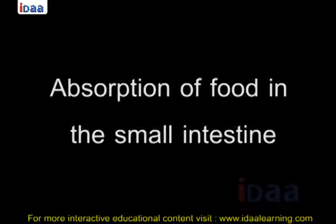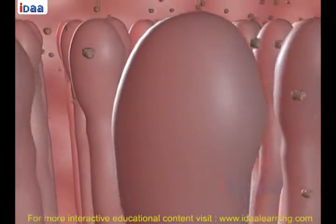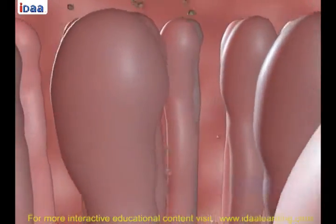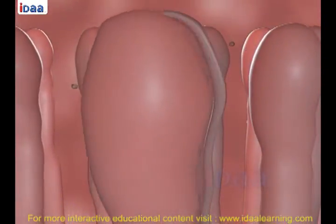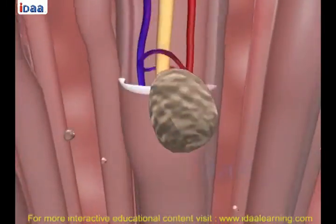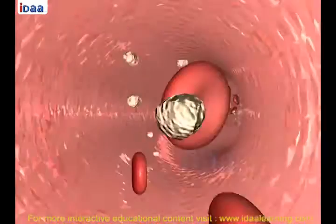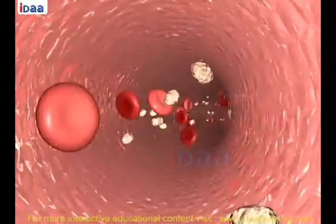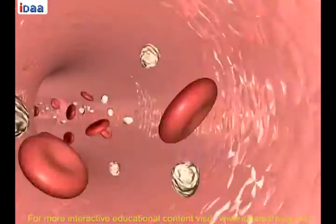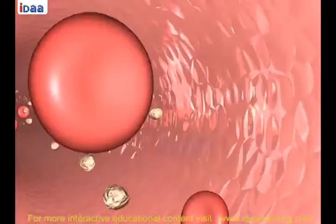Absorption of food in the small intestine. The inner wall of the small intestine has finger-like projections called villi, which have a network of thin blood vessels close to the surface. The villi increase the surface area of absorption and absorb the digested food materials. The absorbed substances are transported through the bloodstream to different organs in the body and are used to build complex substances like proteins. This process is called assimilation. In the cells, glucose breaks down into carbon dioxide and water with the help of oxygen, releasing energy.